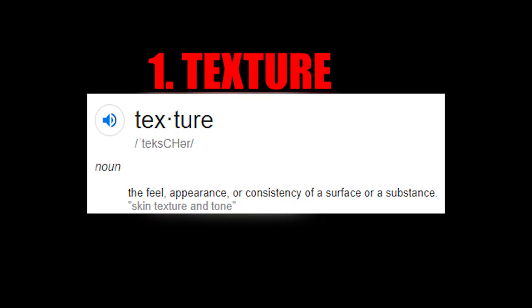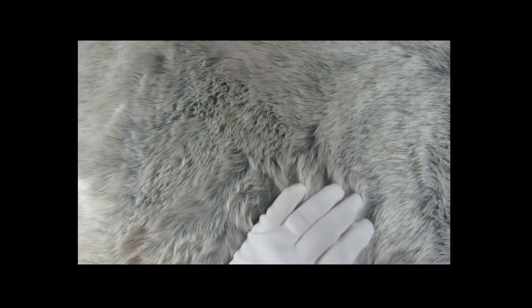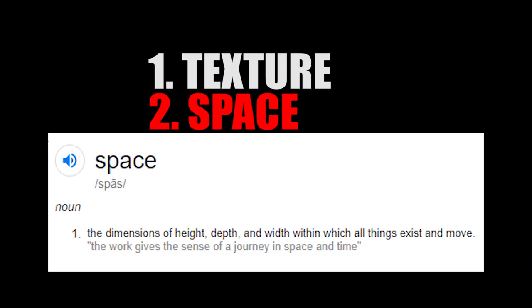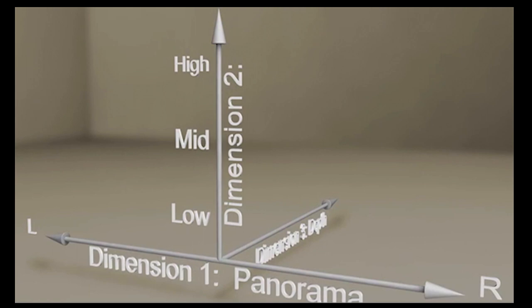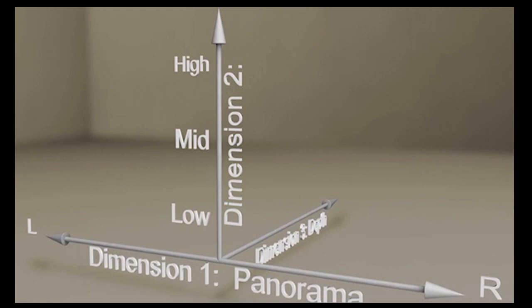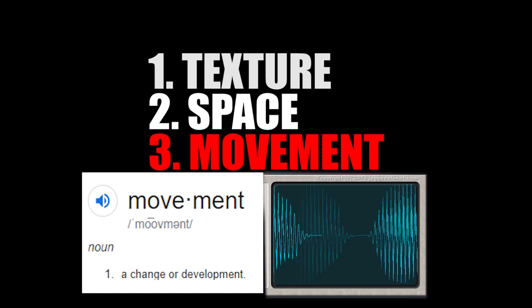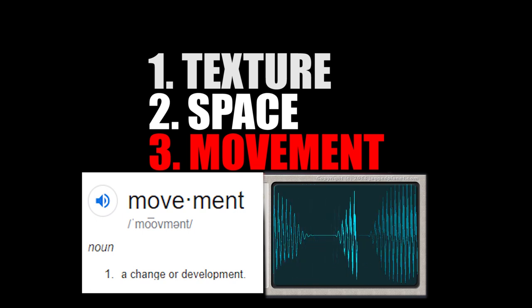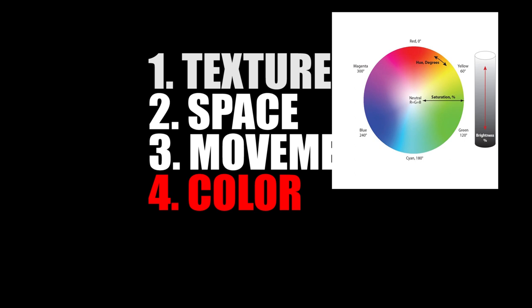And these topics are: texture — how a sound feels if you were to stroke it with your hand; space — if you were to imagine a sound in three-dimensional space, what position would it hold; movement — the motion within the sound itself, whether that's the actual motion of the sound or the motion of filters and vocalizations within it; and color — the richness and fullness of the sound, as well as where it sits in the frequency spectrum. So let's talk about how we can control each of these things.